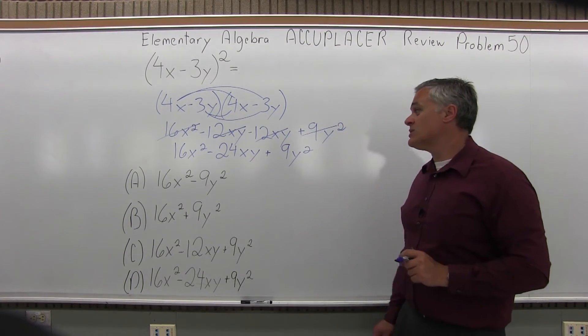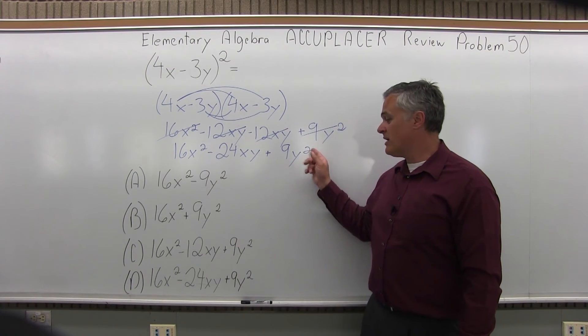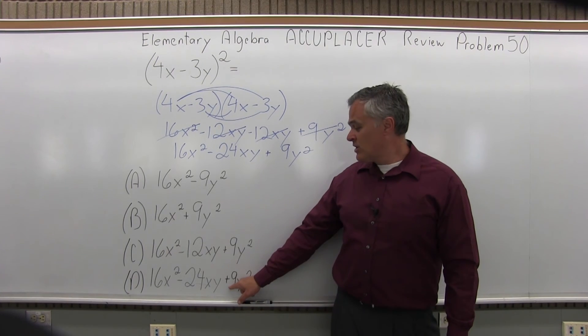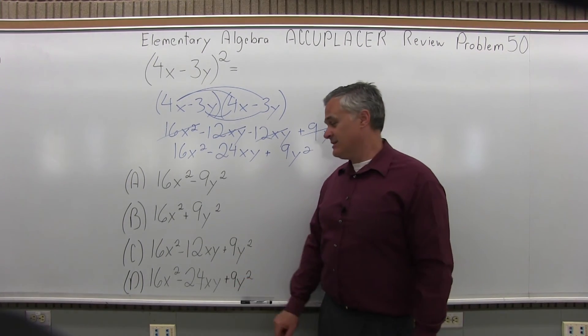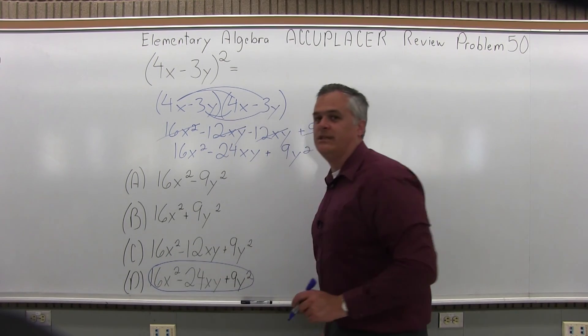And now, if you look at my answer, 16x squared minus 24xy plus 9y squared is a perfect match for option D. So the answer to problem 50 is option D.